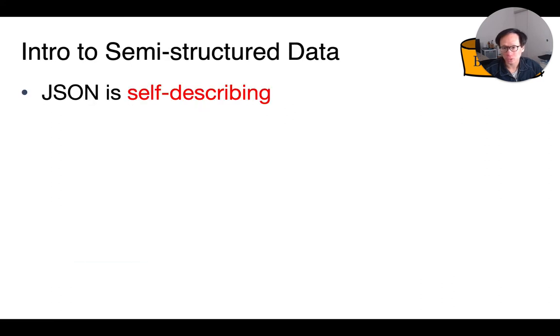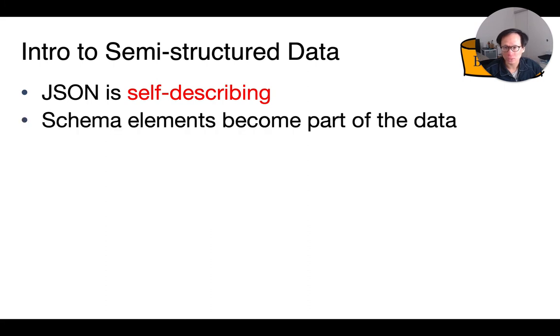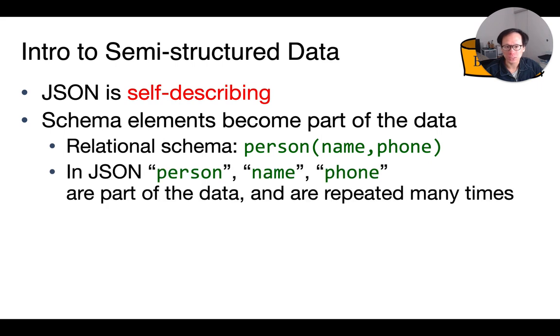As we saw, JSON is self-describing. The schema itself is stored with the document. For instance, a person relation with two attributes would be stored in JSON using different key names that are repeated for every JSON person object. This is obviously a disadvantage, although doing so allows us to be more flexible as the schema can actually change for each object, unlike in relational tuples.